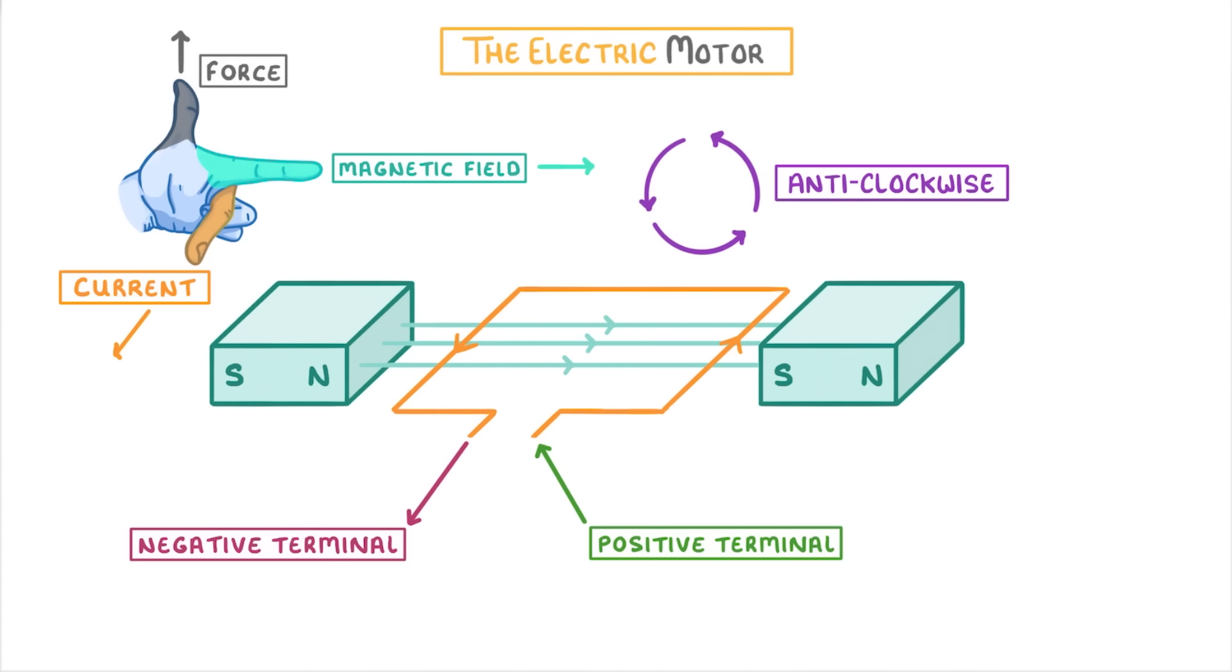This means that if we left it like this, the coil would just keep flipping back and forth on itself, as the forces kept swapping around. It wouldn't ever turn around 360 degrees, and so it wouldn't be very useful.